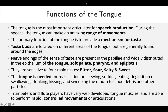A student names the fifth taste sensation: umami — the taste for proteins and amino acids, described as a savory type. So the five tastes are bitter, sour, salty, sweet, and savory/umami. The tongue is also needed for mastication or chewing, sucking of food, swallowing, drinking, kissing, and sweeping the mouth for food debris and other particles.